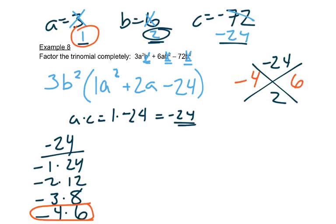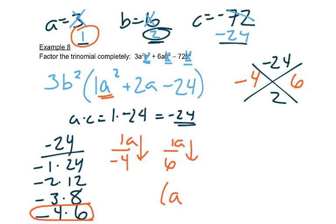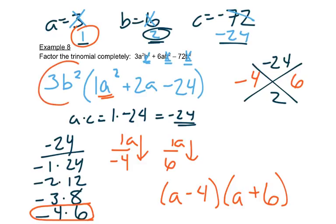So my A is 1 — I'll write it on top: 1 over negative 4, and then 1 over 6. There's an A squared that's being split up evenly between those two. So now I can just read those straight down: 1A or A minus 4, and then 1A or A plus 6. And this 3B squared that was out in front needs to stay out in front.